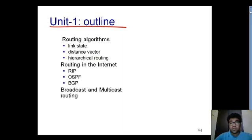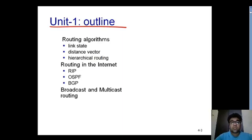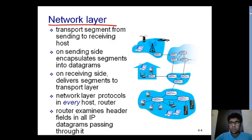In internet routing we will learn three protocols: RIP (Routing Information Protocol), OSPF (Open Shortest Path First), and BGP (Border Gateway Protocol), followed by broadcasting and multicasting. Before going into the detail of the routing part, let me give you an idea about the network layer.